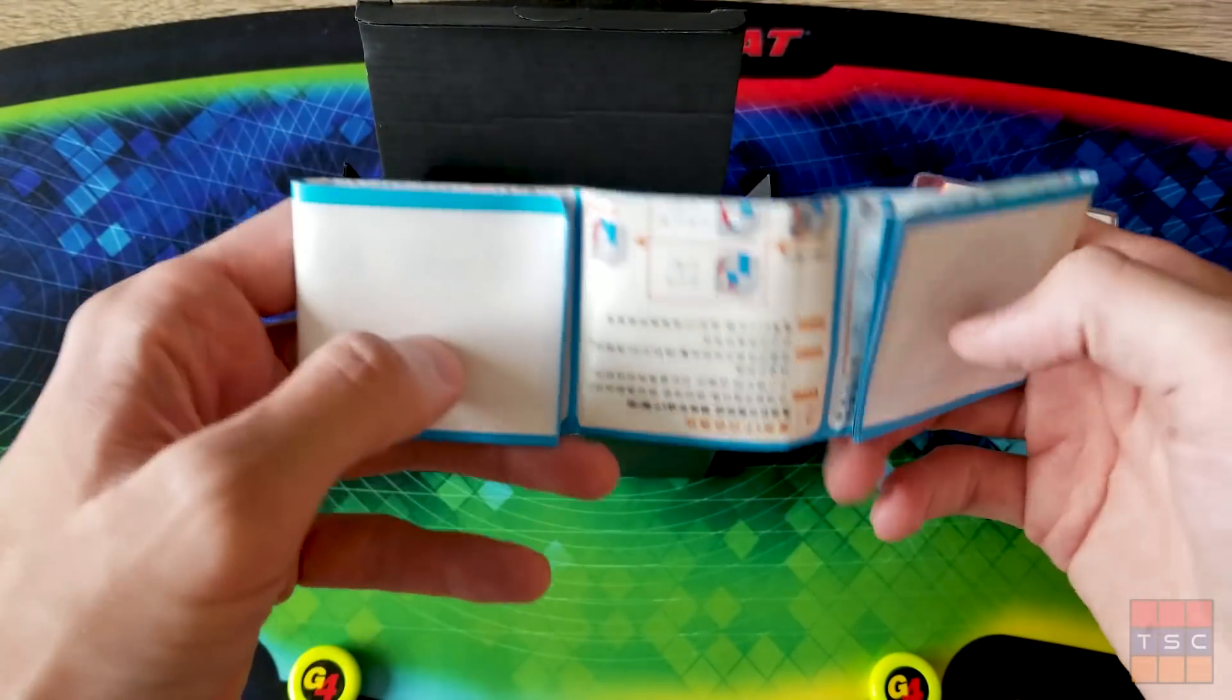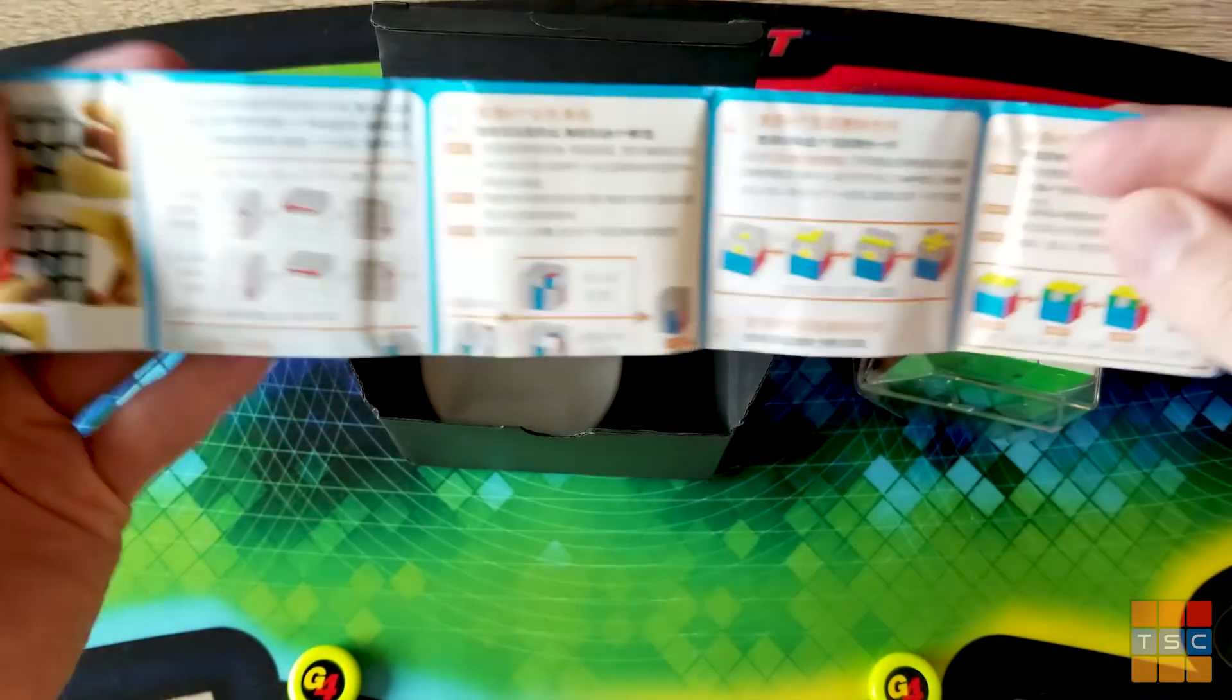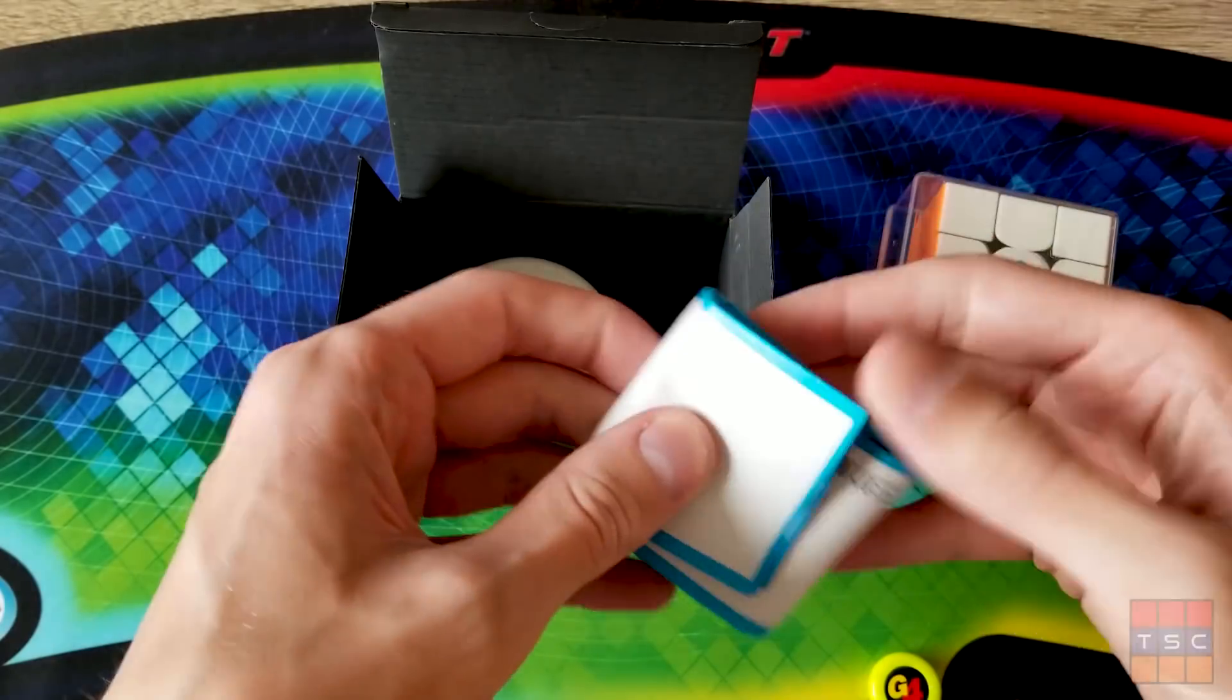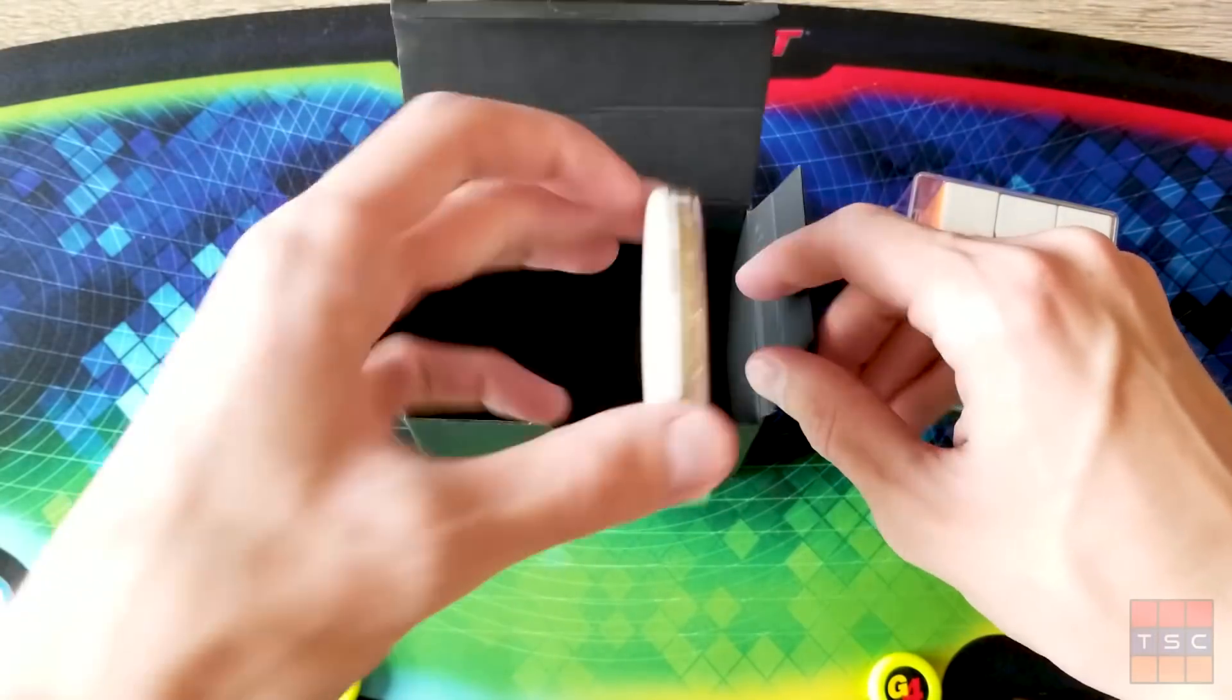We have the usual pamphlet on how to solve it. I'm assuming most of us don't need this since you're usually not buying a GAN puzzle unless you already know how to solve a 3x3.